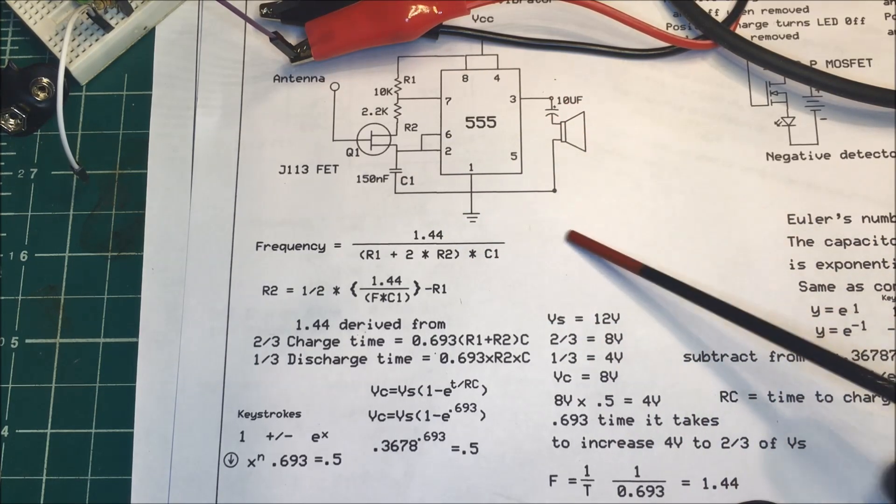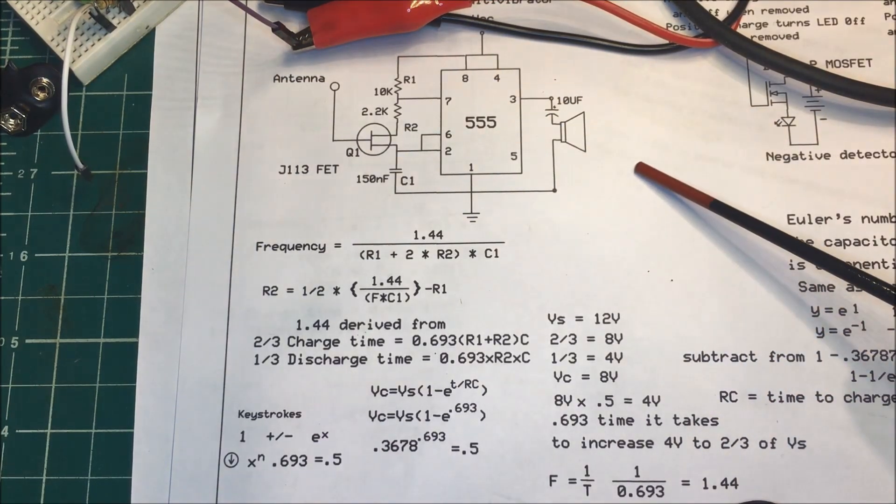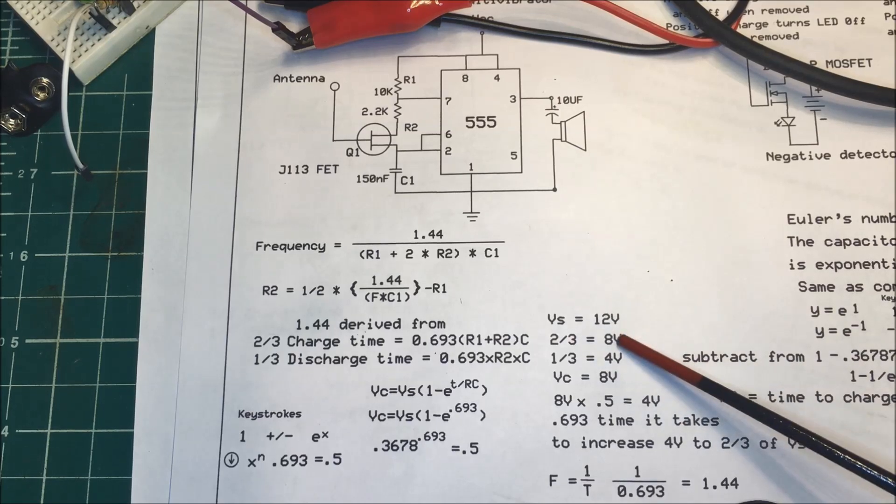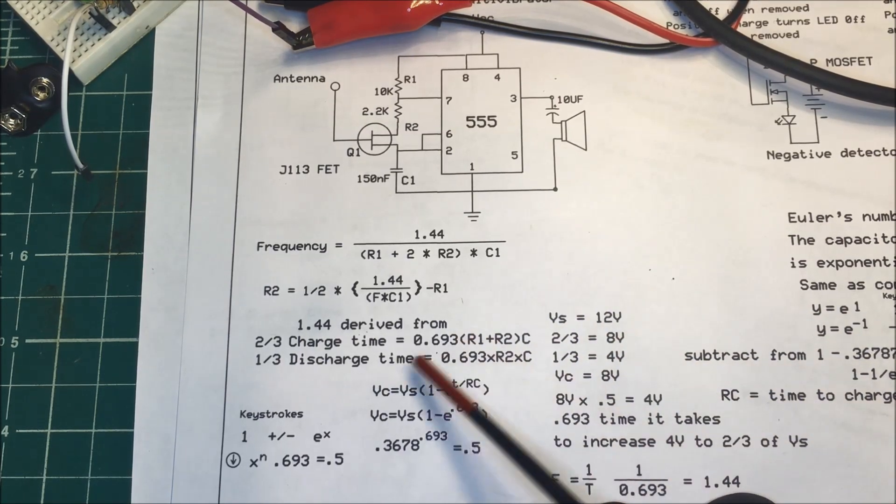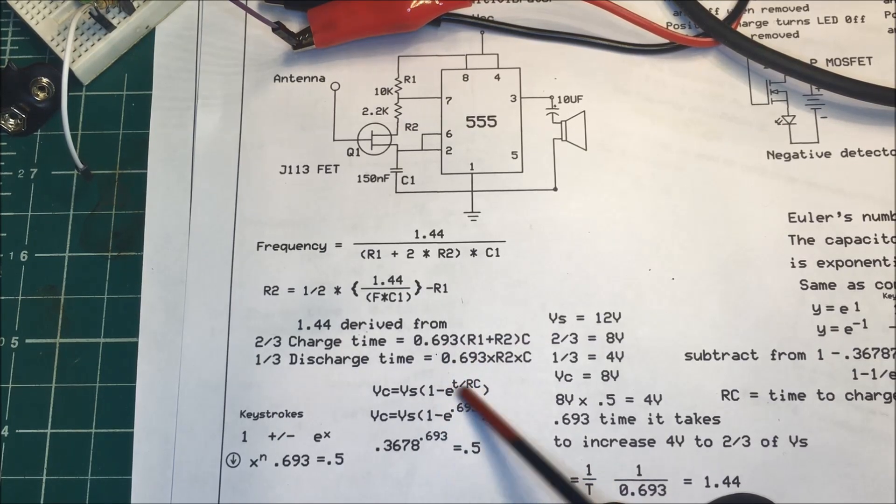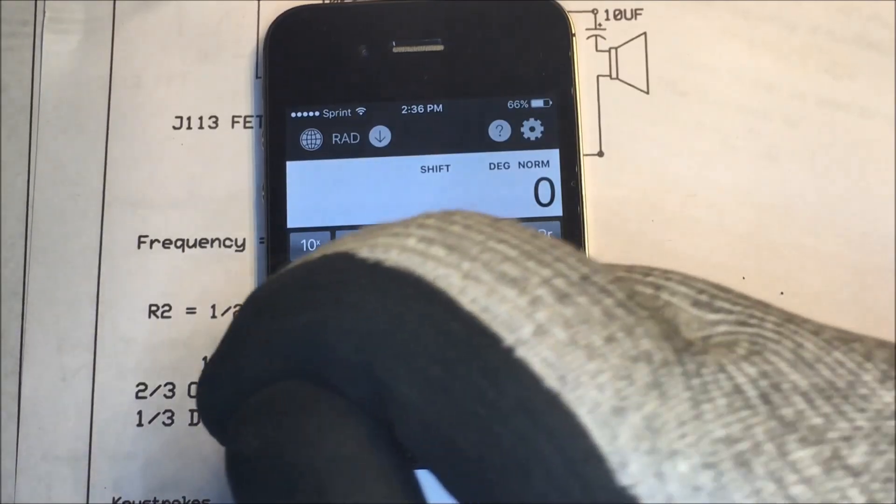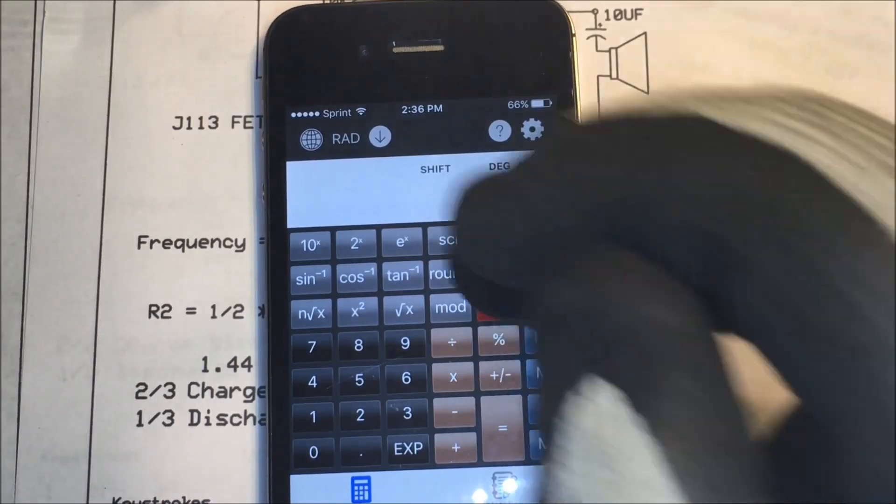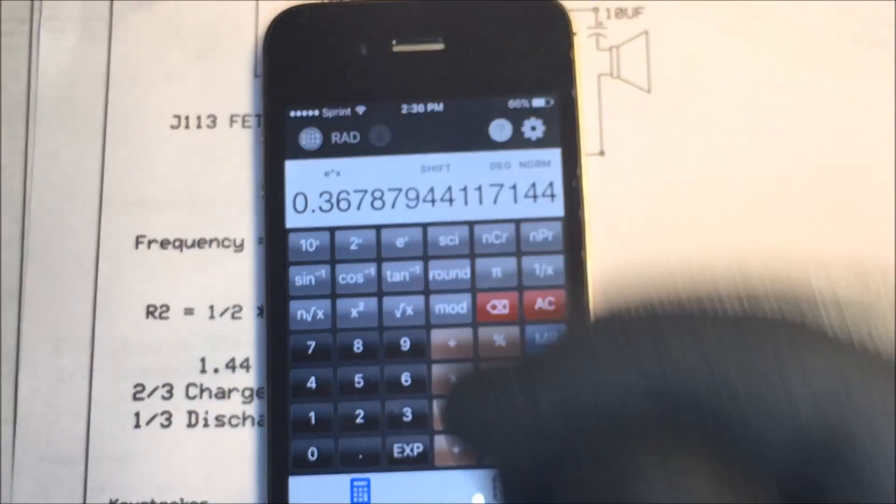So instead of going from zero to 12—in this case I have 12 volts across here—instead of going from zero to 12 it goes from 4 volts to 8 volts here. Now if we take this 0.693 number here and we put it into Euler's formula over here I'll do that on the calculator. All right here at the calculator, let's take minus 1 e, okay, gives us this number here.